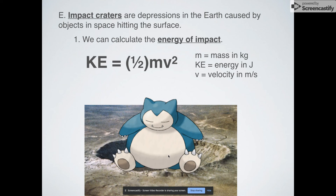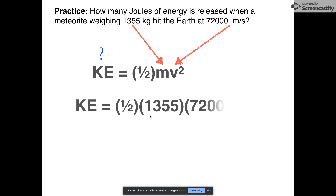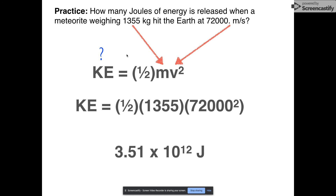Here is an example: how many joules of energy are released when a meteorite weighing 1,355 kilograms hits the Earth at 72,000 meters per second? This thing is moving fast and it's big, so you're going to get a huge amount of energy released. We don't know KE — that's what we're solving for. Mass is 1,355 kg, velocity is 72,000 m/s. Plugging into KE = ½MV²: you're squaring a huge number, so you'll get a big answer. Your calculator will probably give this in scientific notation: 3.51 times 10 to the 12th joules. That is a huge amount of energy being released by a meteorite hitting the Earth.